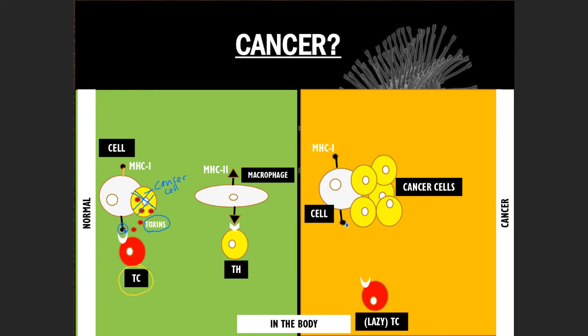What happens if TC is not active? With lack of surveillance, cancer cells will grow because TC will not kill them. This is how cancer develops — one of the disorders in our immune system. Some people may have TC that doesn't perform surveillance and destruction of cancer cells, and they will develop cancer.